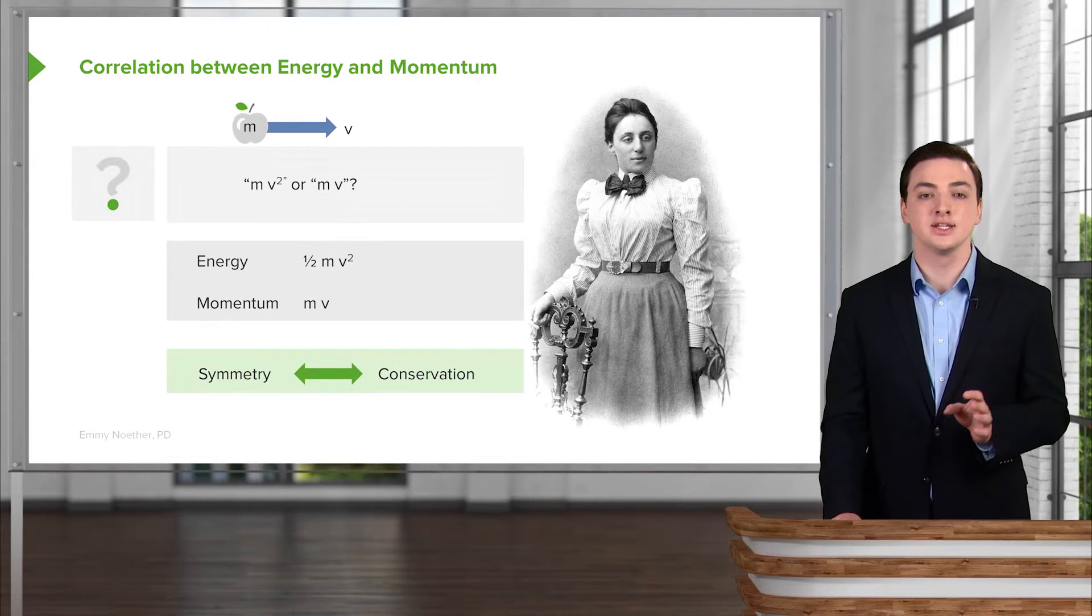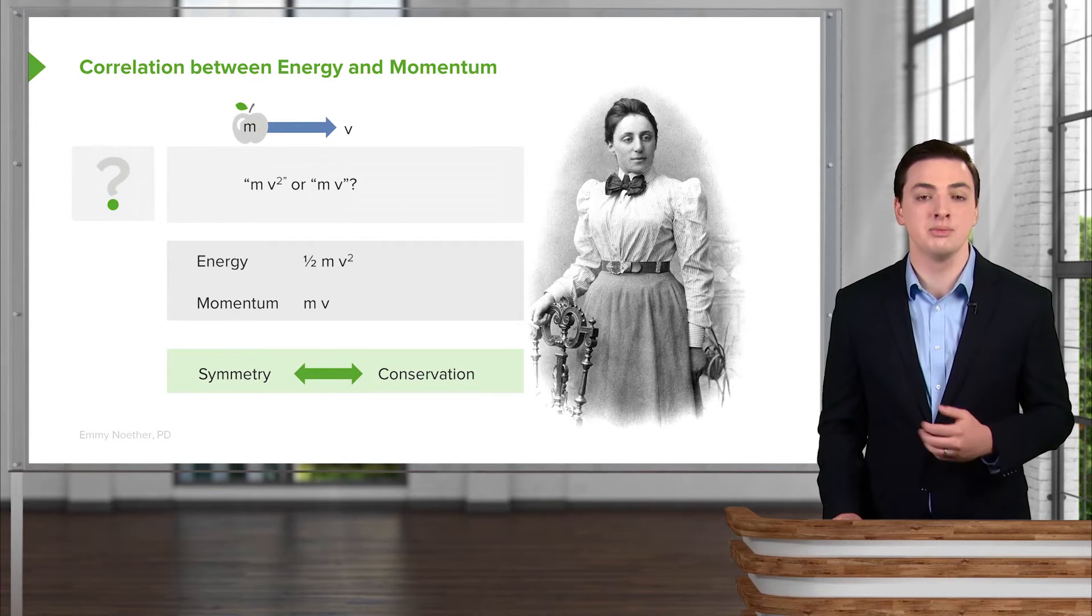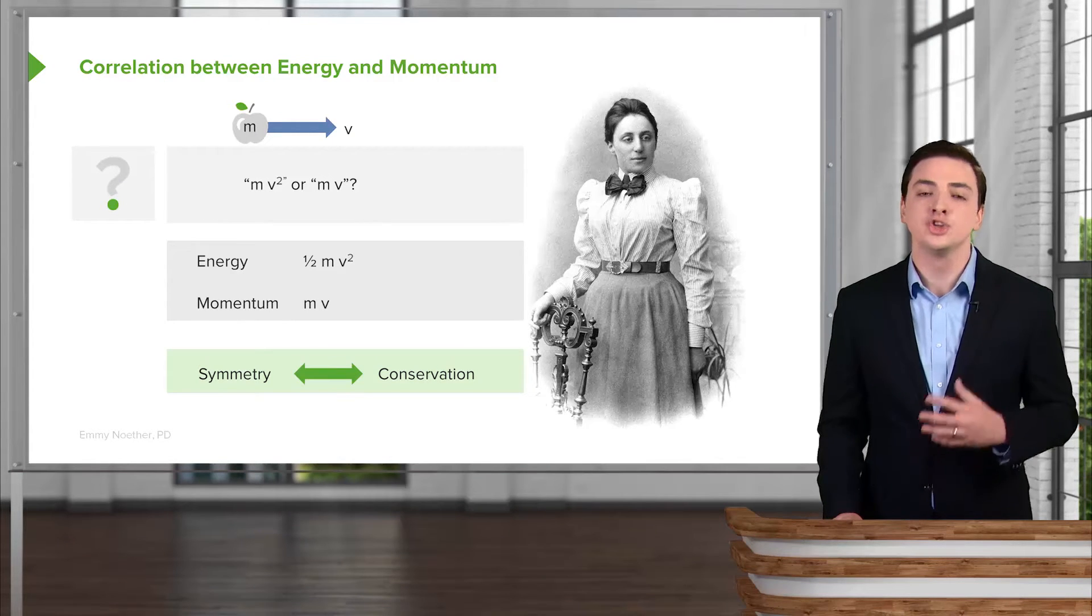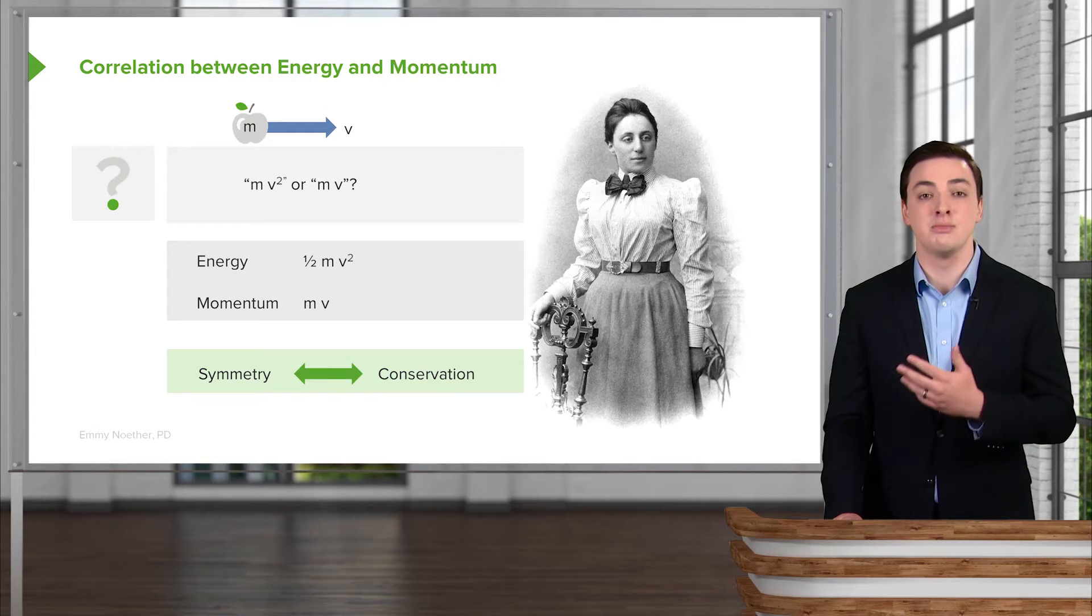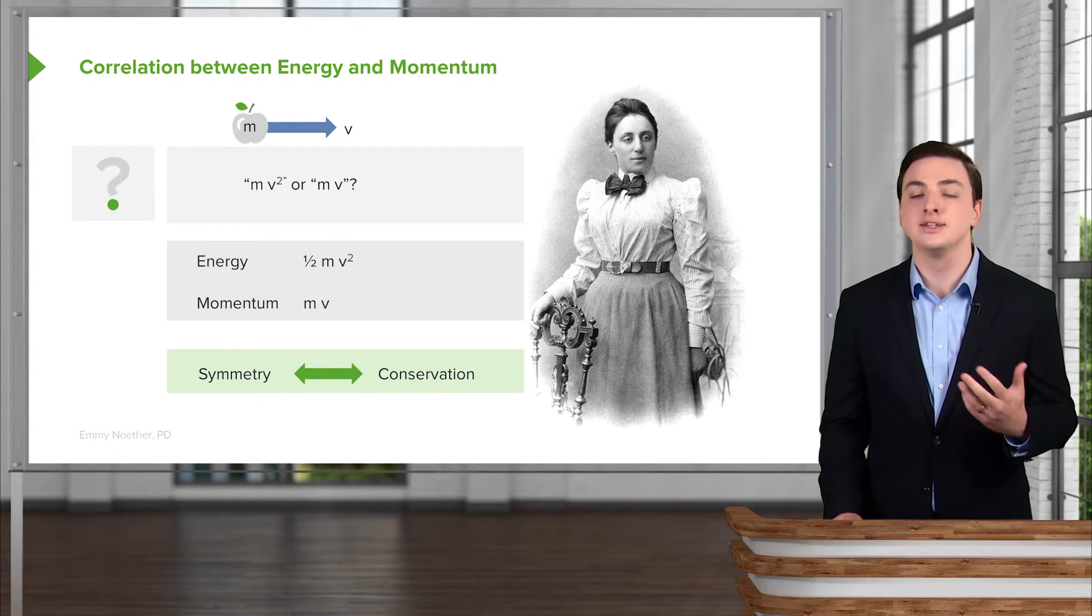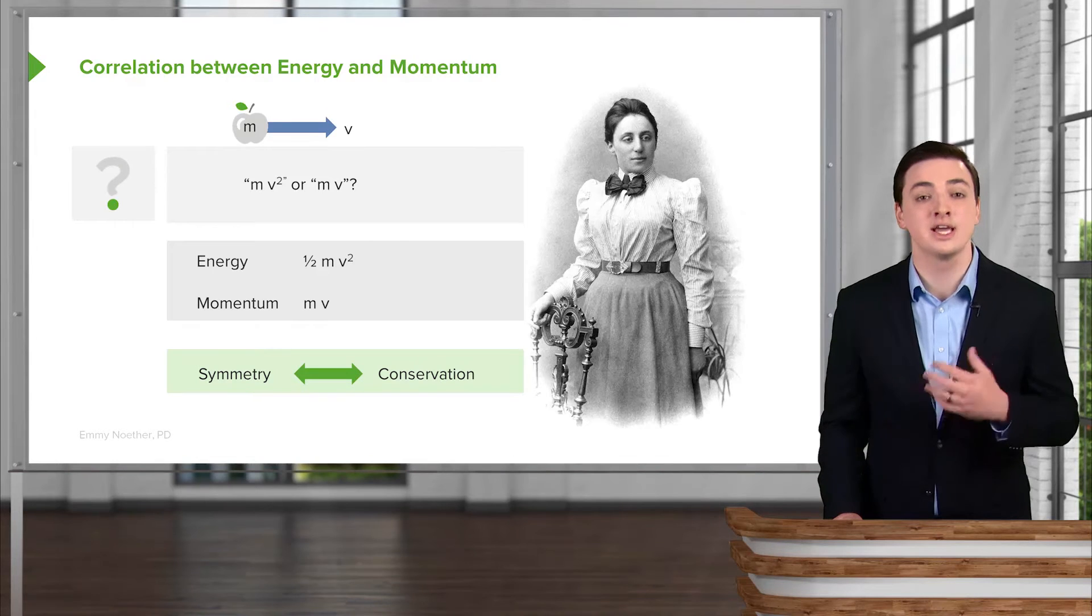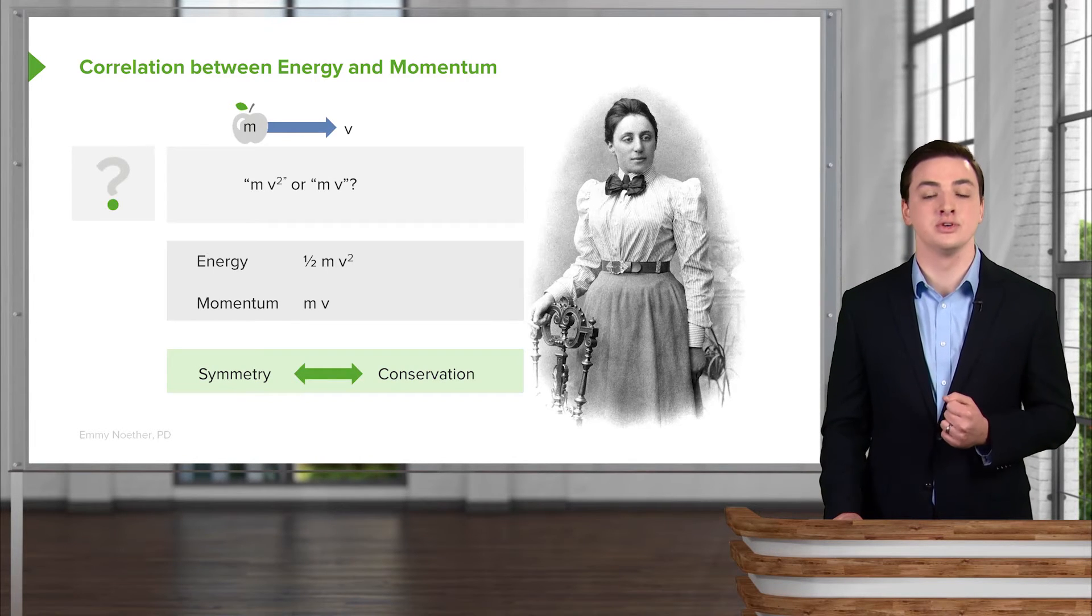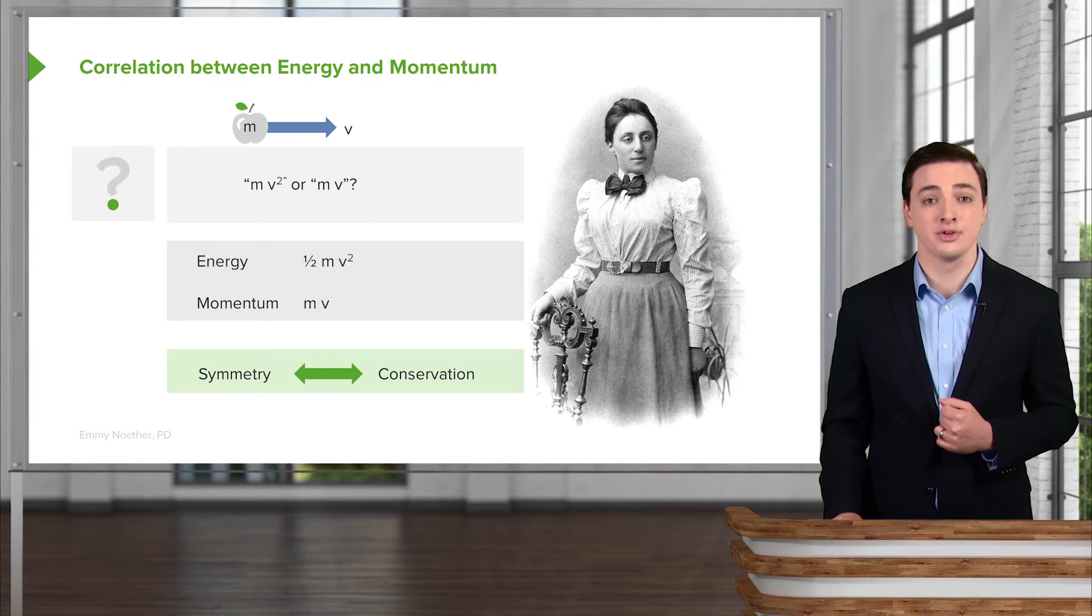And it turns out that energy is a conservation law related to symmetries in time. And momentum is a conservation law related to symmetries in space. So really energy and momentum, these two debated quantities throughout history that we have modern forms for, are not different at all and neither are they in any way contradictory. They're actually talking about space and time and the conservation coming from symmetries in those that we understand now much better, thanks to the work of people like Emmy Noether.